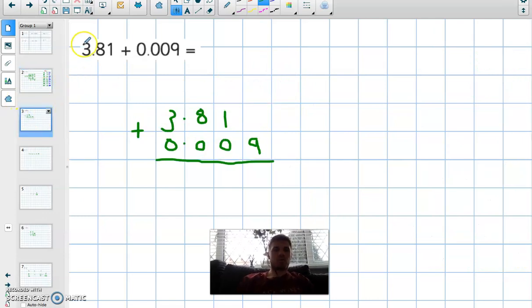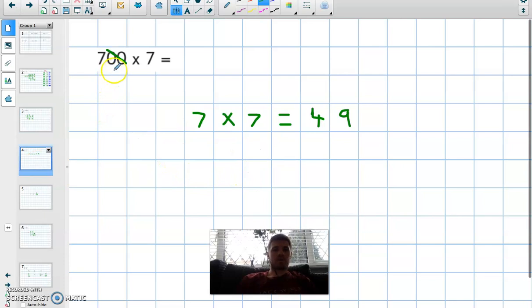Okay, question two: 3.81 add 0.009. Now as you can see I've got an extra digit here so I need to put in my placeholder. The operation is add so I'm going to add these two numbers together. Starting from the smallest digit: 0 plus 9 is 9, 1 plus 0 is 1, 8 plus 0 is 8. Make sure I drop the dot down, and 3 plus 0 is 3. So 3.819 is the answer.